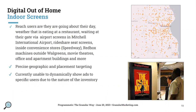Another area programmatic can encompass is digital out-of-home, or DOOH. Within digital out-of-home there are indoor and outdoor screens. Indoor screens are pretty much any screen that's not one of the digital channels previously shared — you can reach people as they're going about their day, whether they're eating at a restaurant, waiting at their gate at Mitchell International Airport, in an Uber with a screen on the back, getting gas at Speedway, at Redbox machines outside Walgreens, movie theaters, office buildings, apartments, and more. You get really precise geographic and placement inventory.